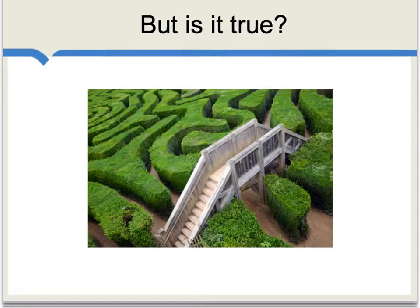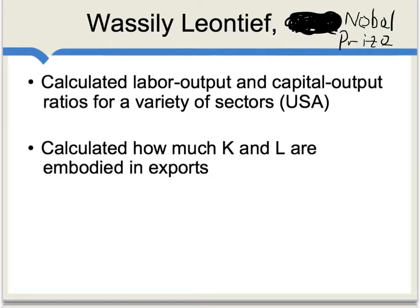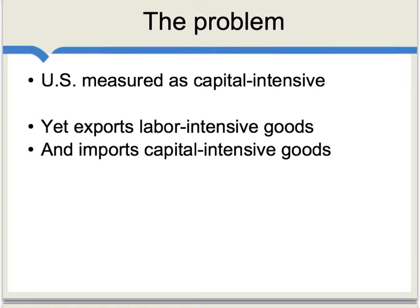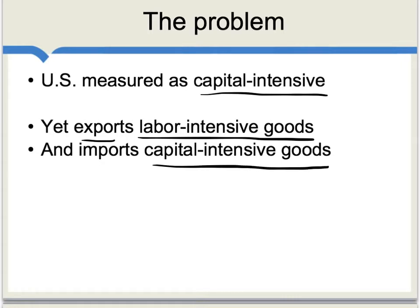But we run up against that very tough question: is this actually true? Enter Vasily Leontief, who later won a Nobel Prize in economics. He published a very famous paper in 1953 in which he calculated the labor output and capital output ratios for a variety of sectors in the American economy, and also how much capital and labor are embodied in exports. The problem: the United States measured as capital-intensive by global standards, yet Leontief found that the U.S. exports on net labor-intensive goods and imports on net capital-intensive goods — exactly the opposite of what the Heckscher-Ohlin theorem would predict.